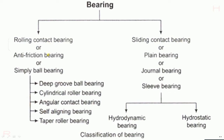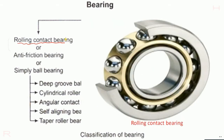Rolling contact bearing is also called anti-friction bearing or simply ball bearing. This type is subdivided into further types. In rolling contact bearings, contact is made by rollers — spherical balls inserted inside to avoid friction.